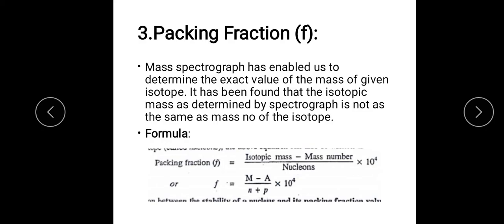Mass spectrograph has enabled us to determine the exact value of the mass of a given isotope. When we find out an isotope using mass spectrograph, we find that the isotopic mass is not exactly the same as its mass number. The mass number is a whole number, but the mass spectrograph value is not a whole number. This difference gives us the packing fraction. The formula for packing fraction is: (isotopic mass − mass number) / mass number × 10⁴.